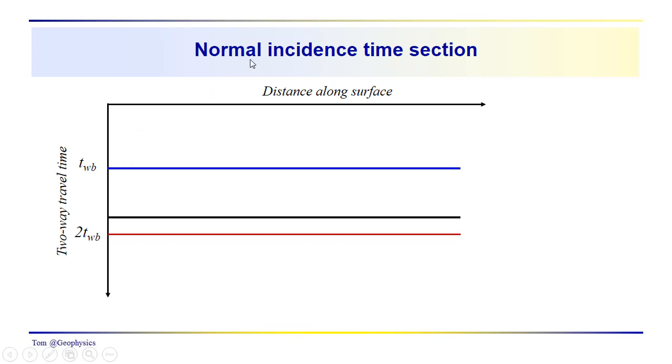Now, here we're going to be taking a look at a normal incidence time section. We're showing our data in a shot record previously, but if we were to stack that, what we would see would be,